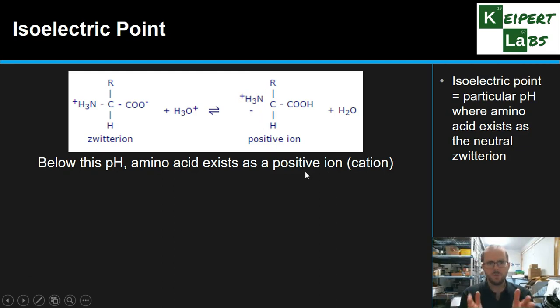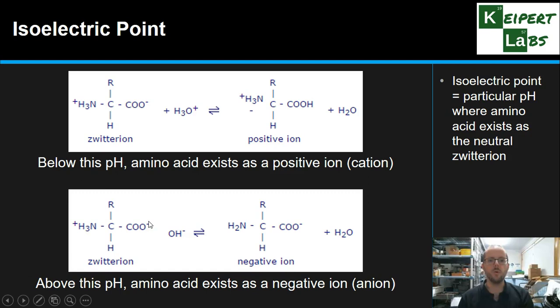But let's say we come back to that middle with the zwitterion, and we bring the pH further up. That is, there's fewer protons around. What happens then is that all available protons are stripped away. So this extra proton that's on the nitrogen here is taken away, and we're just left with a negative ion, anionic form.